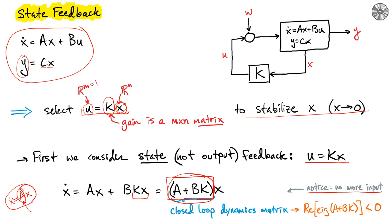And so stability is going to be guaranteed depending on the eigenvalues of the matrix A plus BK. In particular, the real part of the eigenvalues of A plus BK must be negative for it to be stable.